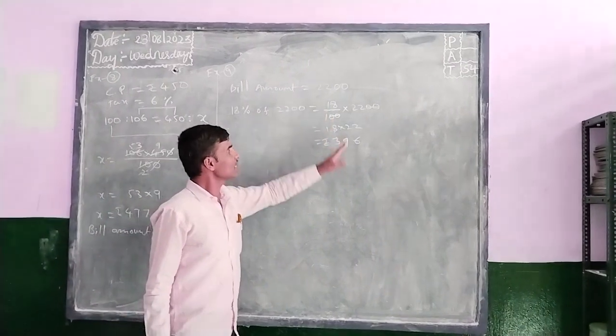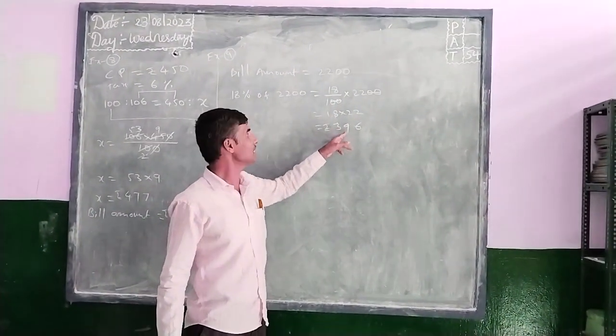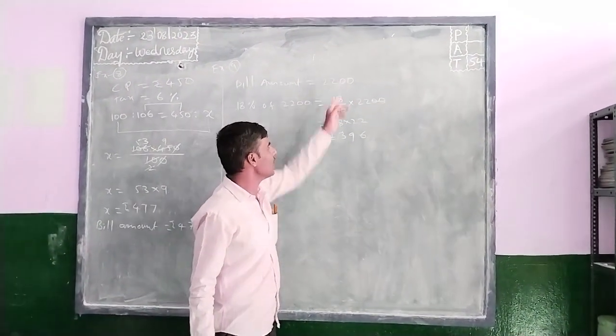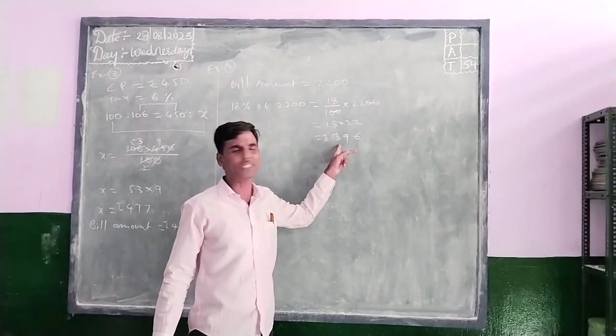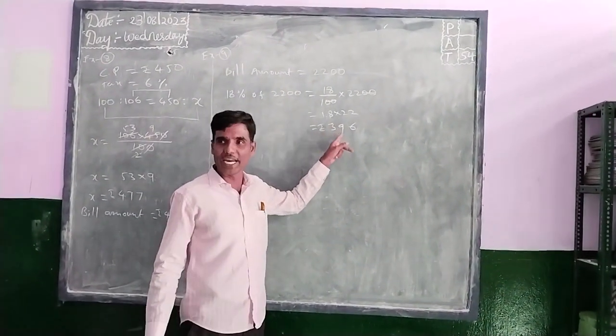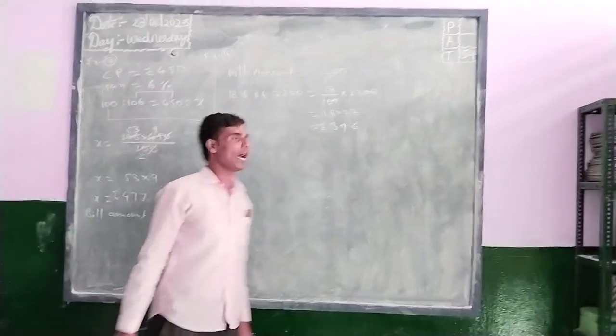In this 18% GST, 2200 means GST equals 396.